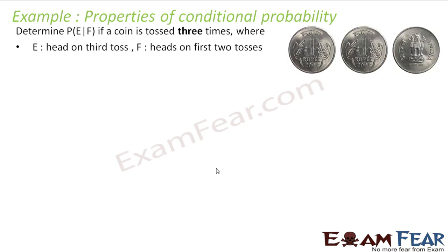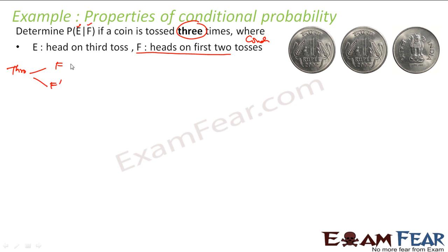Let us take some better examples now. A coin is tossed thrice, where E is head on the third toss and F is head on the first two tosses. We can try using the graphical way first. The condition F means heads on the first two tosses, and F dash means not heads on the first two tosses — meaning head-tail, tail-head, or both tails on first two tosses.